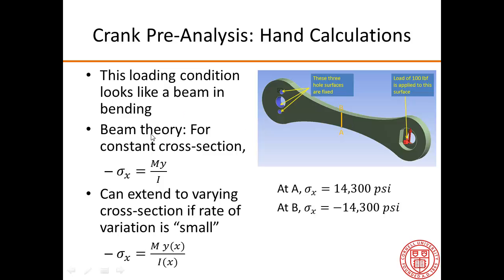Now, the conventional beam theory that we come across is for constant cross-section where the bending stress is given by this classic formula. Now, we can extend this to varying cross-section if the rate of variation of the cross-section is small. And in this case, it's reasonable to assume that.